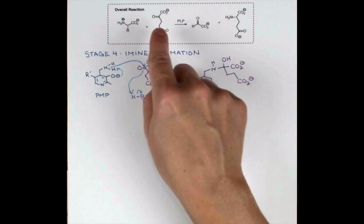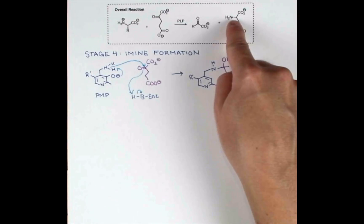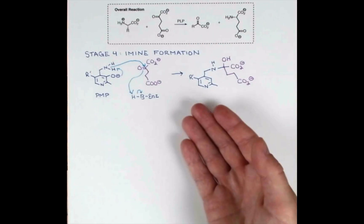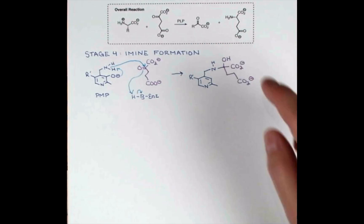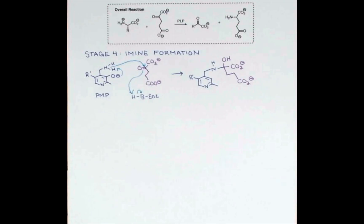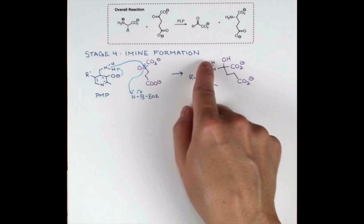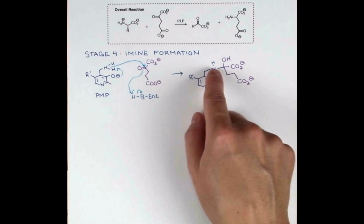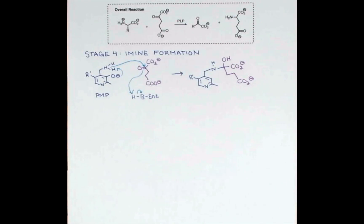If we look back to our overall reaction, we see our carbonyl is converting to an amine. It'll make sense at this point to eliminate water. So we'll use a basic enzyme residue to deprotonate here, allowing nitrogen to form a double bond, and on its way out the OH will grab a proton from the enzyme.